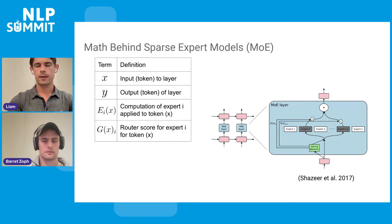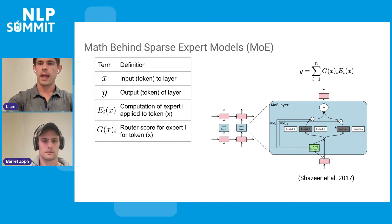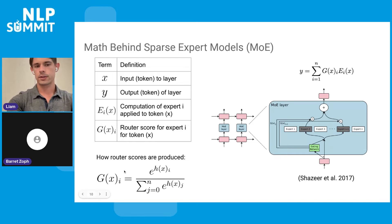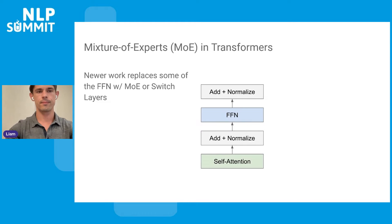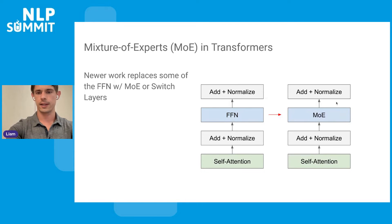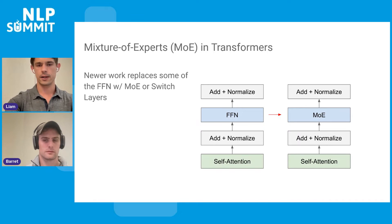To summarize the math: you look at the token representation and compute a probability distribution, or gating network, over the available experts. The scores come from a softmax distribution. An input comes in, you establish a probability distribution over available experts, send the token to the top-rated experts — top-K being the most common approach — and then weight the output by the router probability. Mixture of experts in transformers simply takes the feed-forward layer and substitutes it, so you can think of mixture of experts as a layer inside these bigger neural networks.